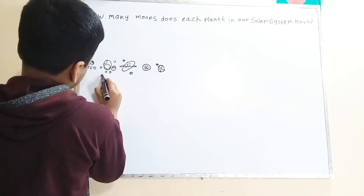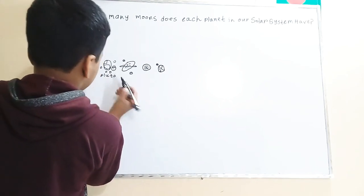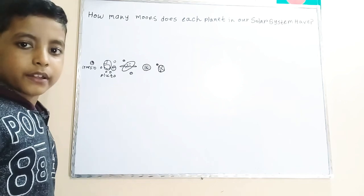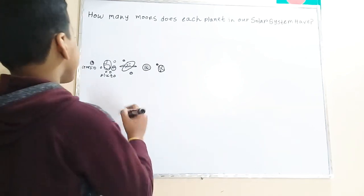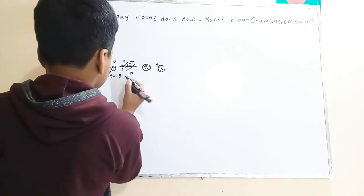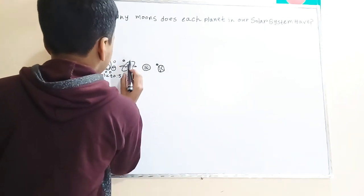Now let's talk about Pluto. Well, Pluto has five moons and the biggest is Charon. Charon is half the size of Pluto. So it has five moons.